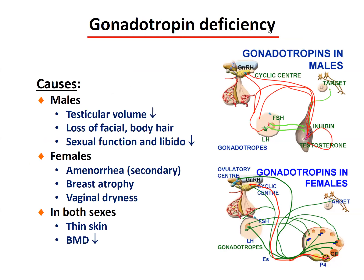In gonadotropin deficiency, in males the clinical manifestations include decreased testicular volume, loss of facial and body hair, reduced sexual function, and decreased libido. In females, a very sensitive sign is secondary amenorrhea — when a girl who has already had menstrual cycles stops cycling. Other signs include breast atrophy, vaginal dryness, and in both sexes thin skin and decreased bone density.